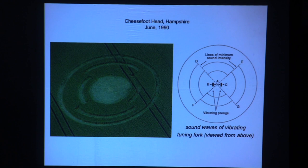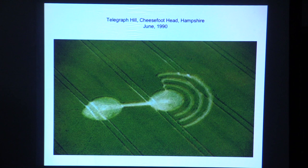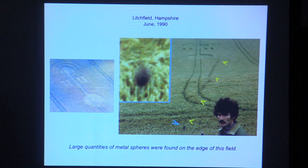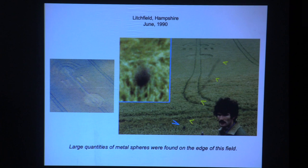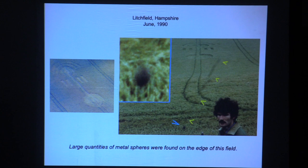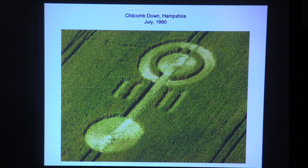This one reminded someone of the sound waves of a vibrating tuning fork. This one reminds me of a message being sent from Telegraph Hill. A farmhand who discovered this formation had his picture taken in front of it — and as the photo was taken, something was coming from above almost hitting him on the head. Large quantities of metal spheres were found on the edge of this field. Could the force that made the formation have struck an asteroid and shattered it into these small metal spheres? Who knows?